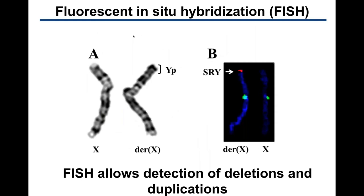Fluorescent in situ hybridization (FISH) has further increased resolution from millions of base pairs to a few hundred thousands. On the left is a regular karyotype showing that the X chromosome, here called the derivative X chromosome, has an extra piece. On the right is FISH using a fluorescent probe specific for the sex-determining SRY gene, showing that this derivative X chromosome contains the SRY gene. Therefore, this individual is likely a 46XX male with male external genitalia, testes, often well-virilized, and sterile.